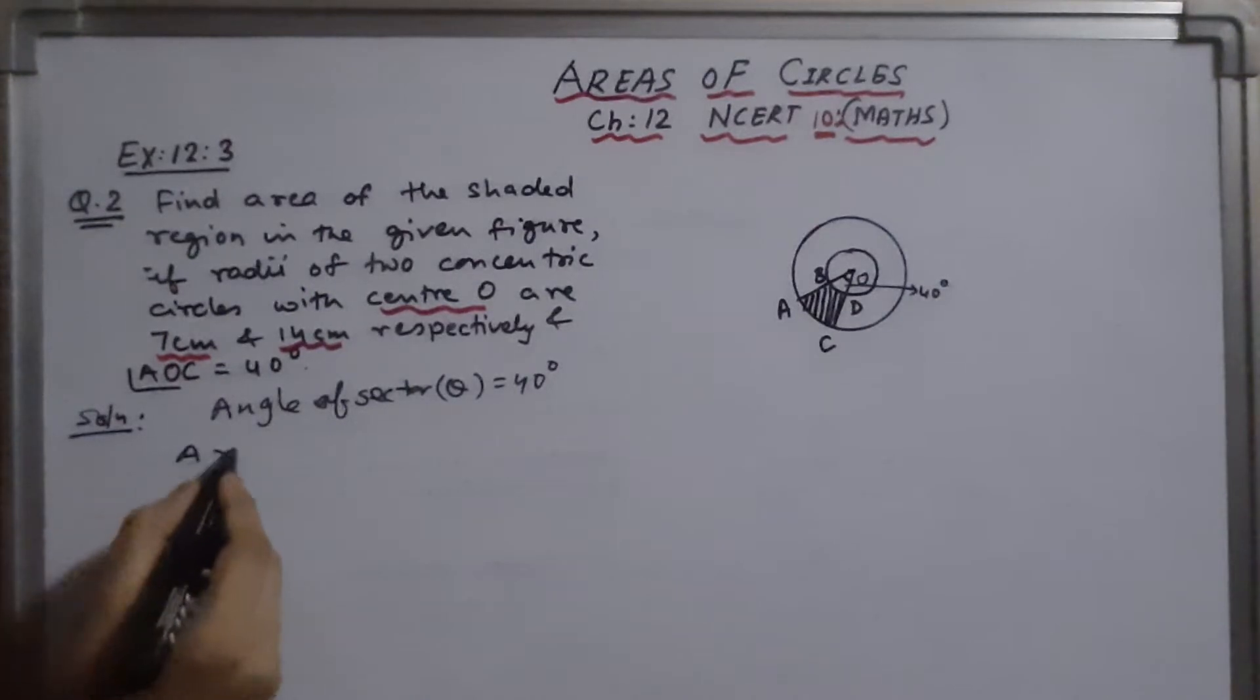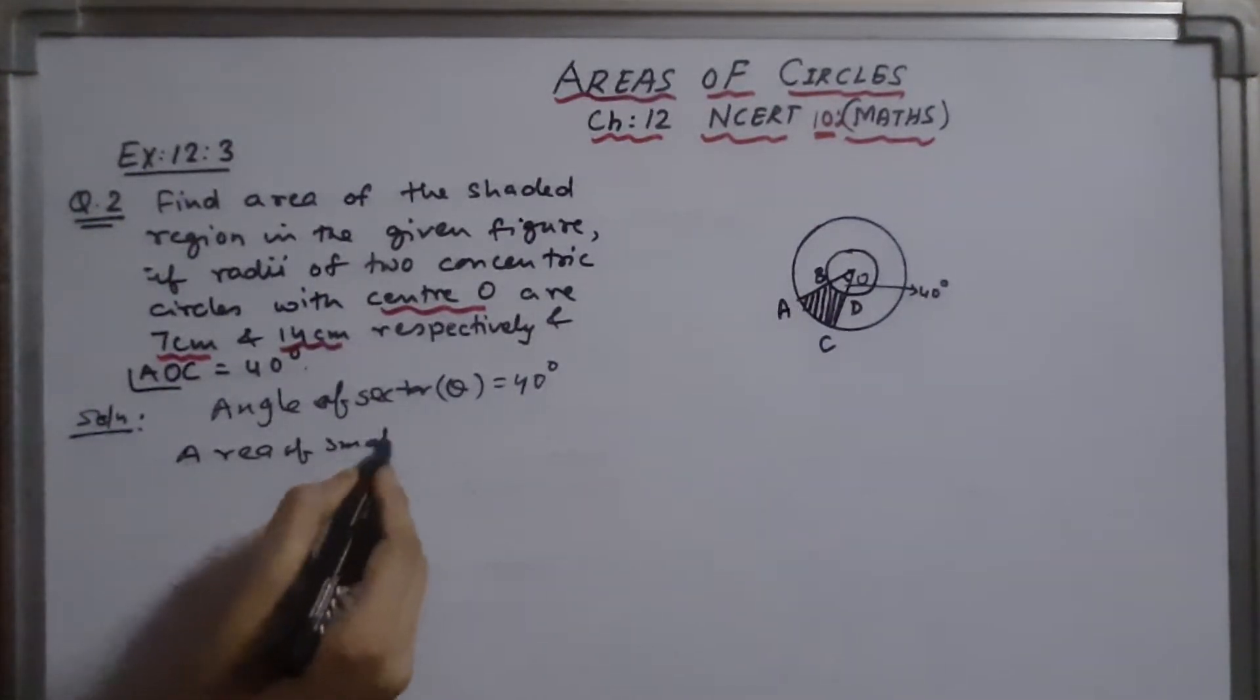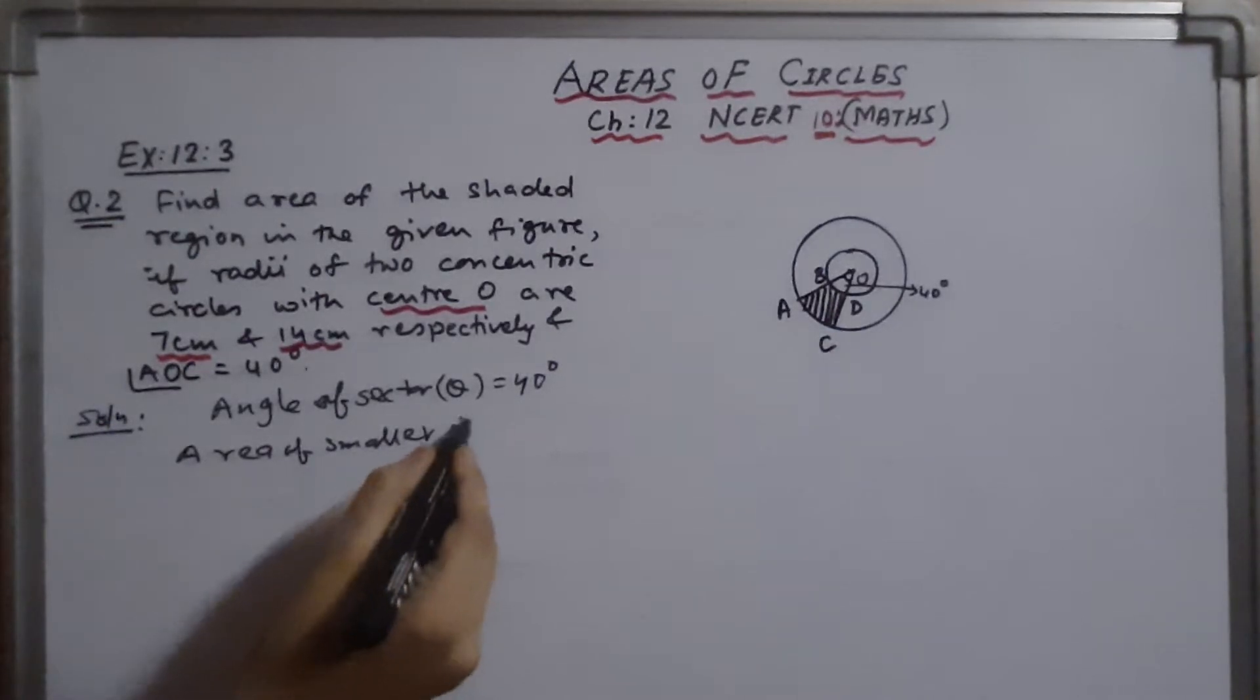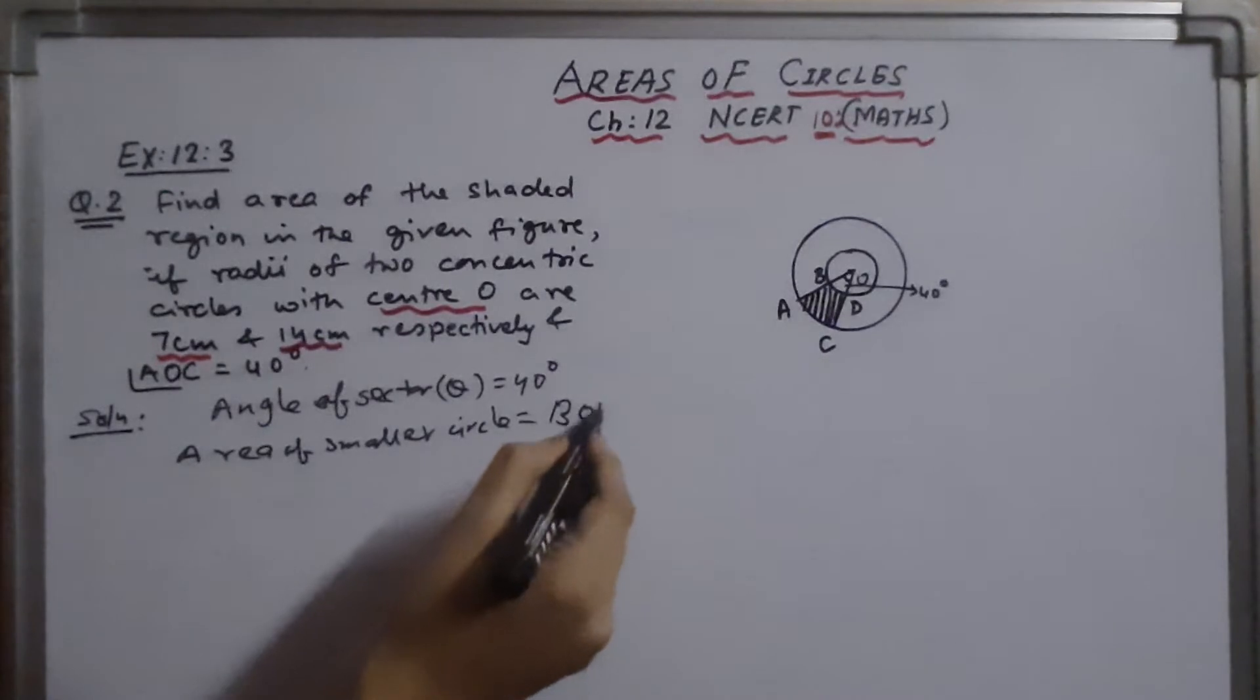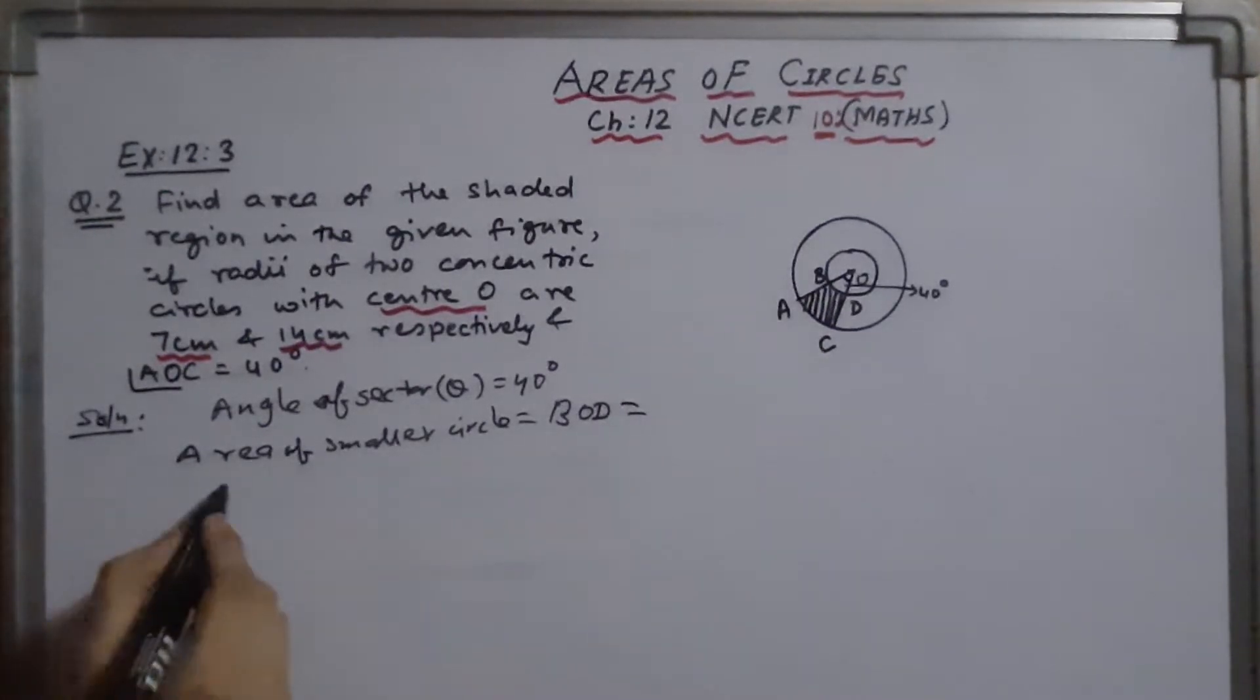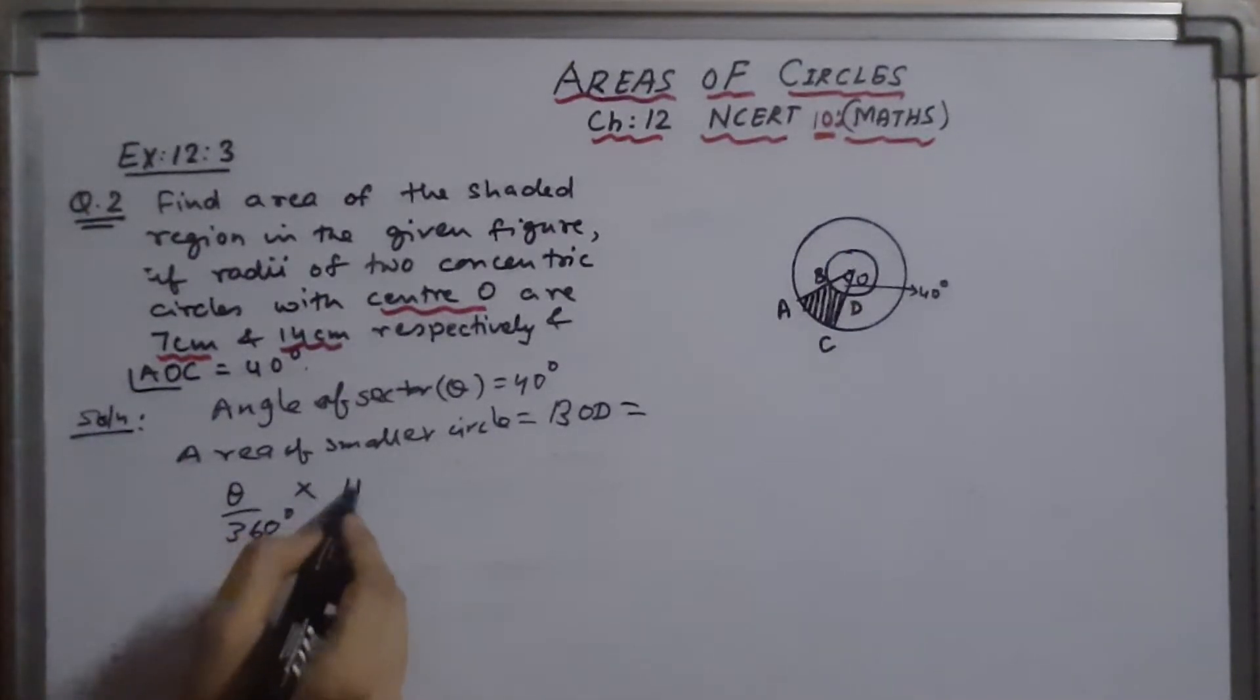So area of smaller circle, that is BOD, which will be theta by 360 degrees into area of circle. We know that it is pi R square.